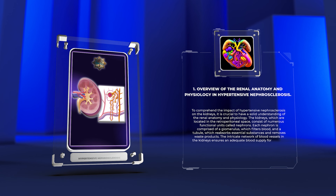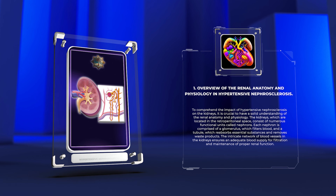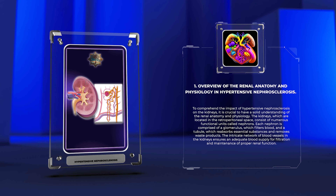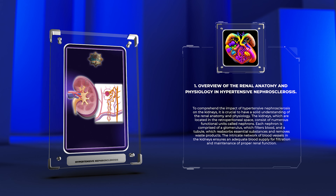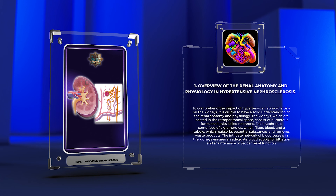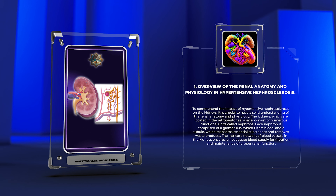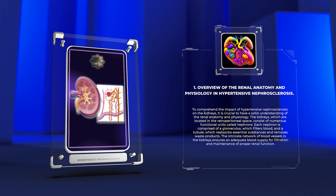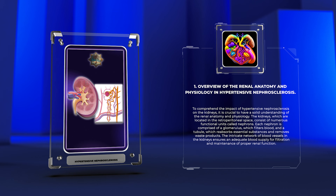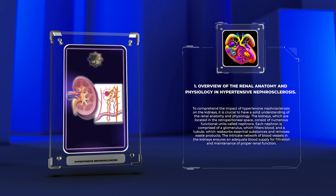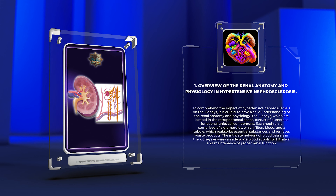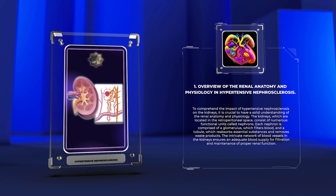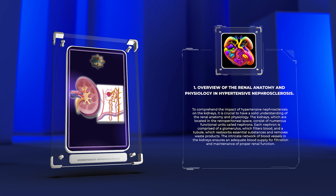To comprehend the impact of hypertensive nephrosclerosis on the kidneys, it is crucial to have a solid understanding of the renal anatomy and physiology. The kidneys, which are located in the retroperitoneal space, consist of numerous functional units called nephrons. Each nephron is comprised of a glomerulus, which filters blood, and a tubule, which reabsorbs essential substances and removes waste products. The intricate network of blood vessels in the kidneys ensures an adequate blood supply for filtration and maintenance of proper renal function.